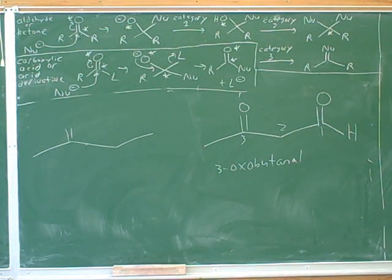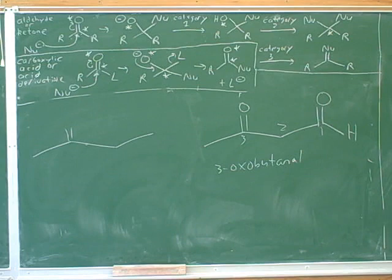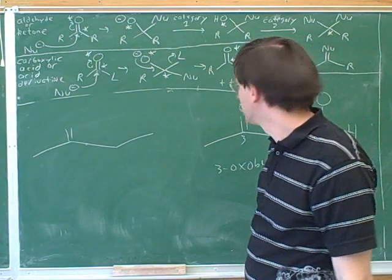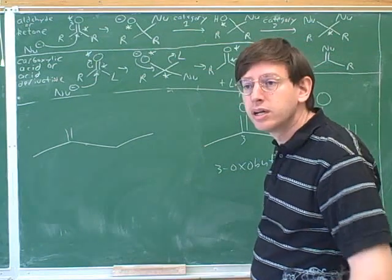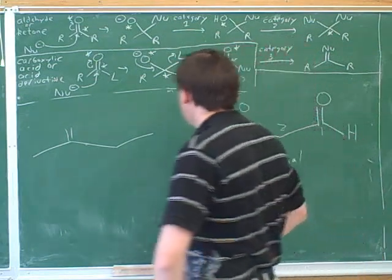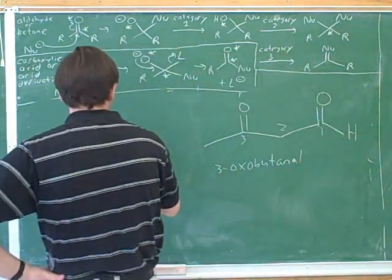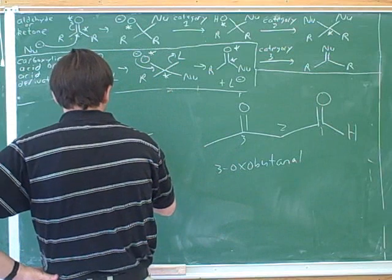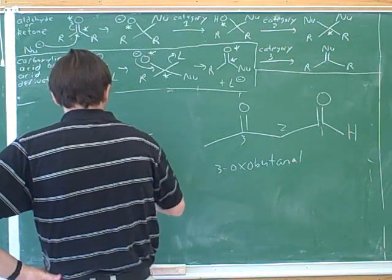The textbook doesn't have any examples of diketones, but I suppose those would be called diones — like a 10-dione, like the one that we just drew. If that one would have a carbon chain with two ketones, would it be like a 2,4-dione?